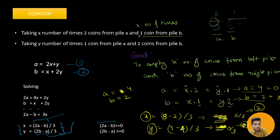This equation basically tells us: if x and y are positive integral multiples — that is, a positive integral multiple of three — then we will be able to finish off these piles. Let us now code this up.